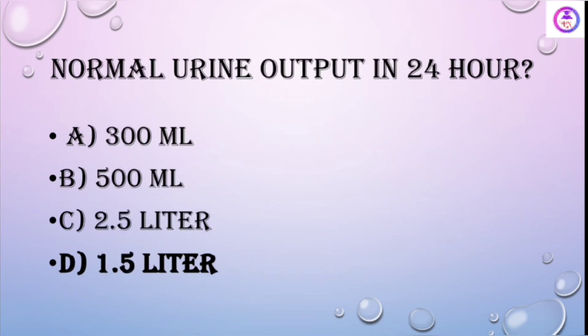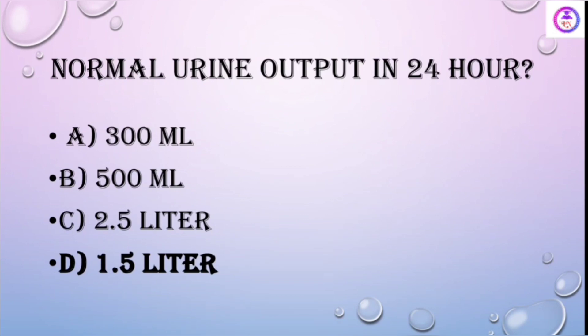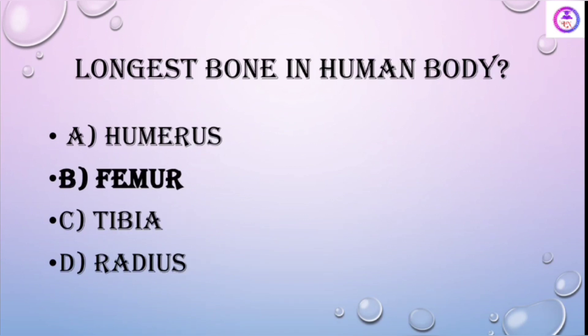Normal urine output in 24 hours for a normal human being is 1.5 liters. The longest bone in the human body is the femur.